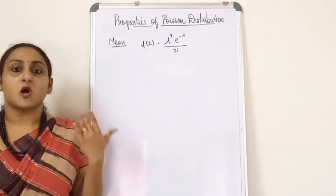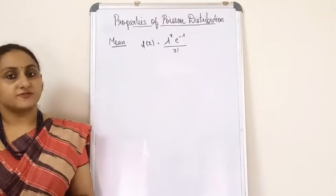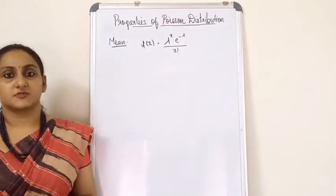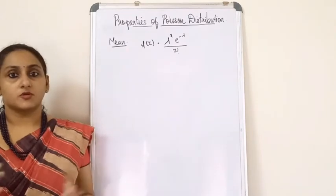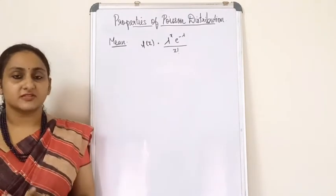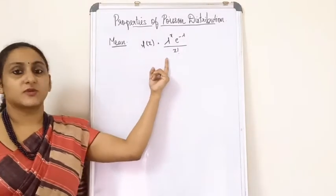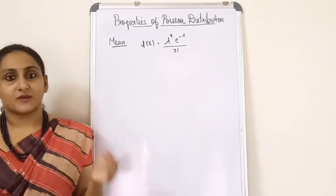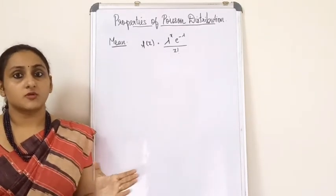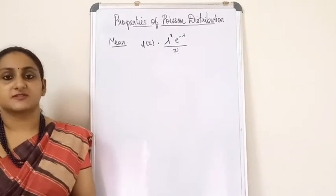Today we will study the properties of Poisson distribution. The first property is about the mean. The density function of a Poisson distribution is f(x) = λ^x · e^(−λ) / x!, where λ is the parameter of the Poisson distribution.